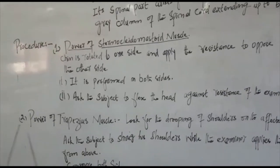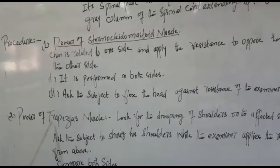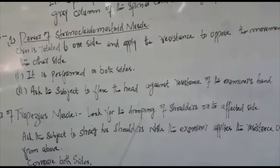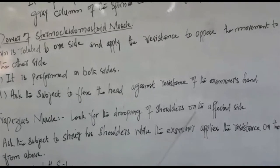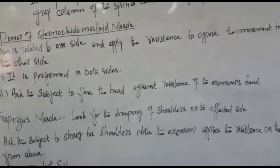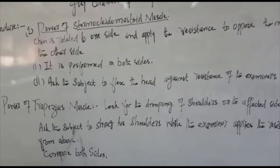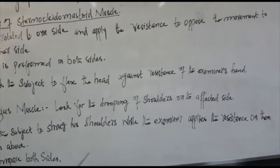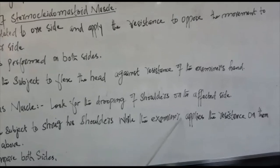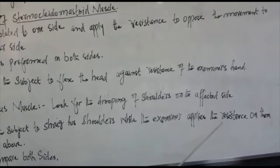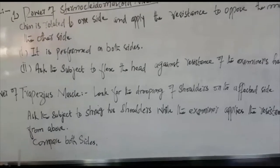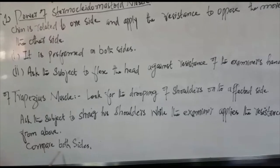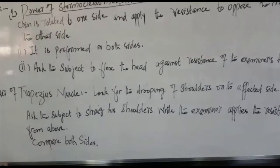Next, we will check the power of the trapezius muscle. Look for the drooping of shoulders on the affected side. Ask the subject or patient to shrug his shoulders while the examiner applies resistance from above. We will compare both sides.